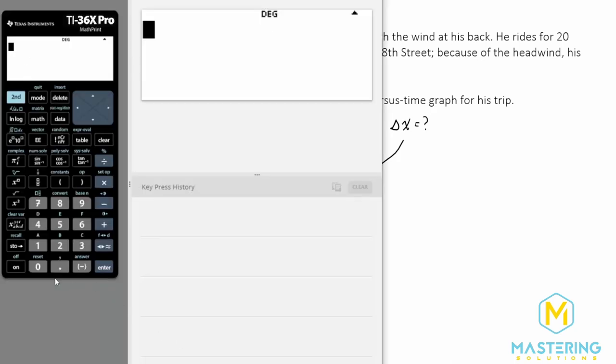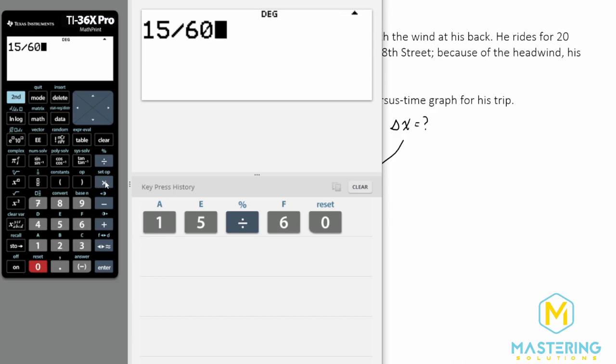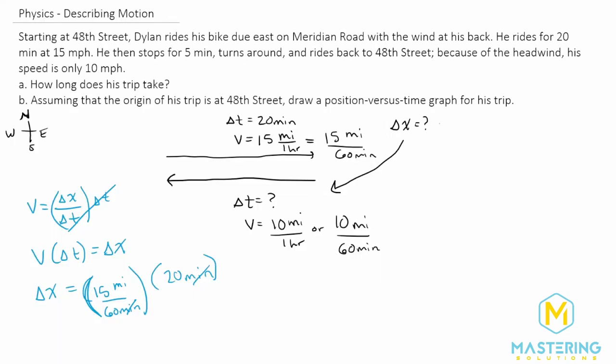So now we have 15 divided by 60, multiplied by 20. So the distance that he went was five miles. So right here, he went five miles distance.